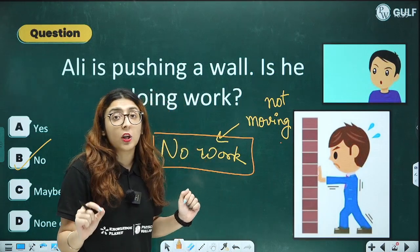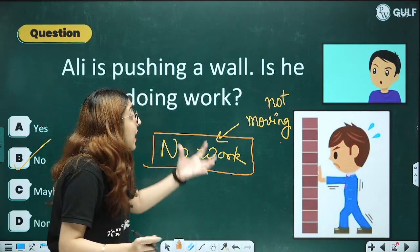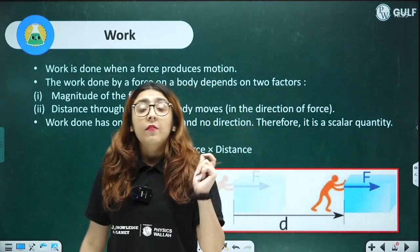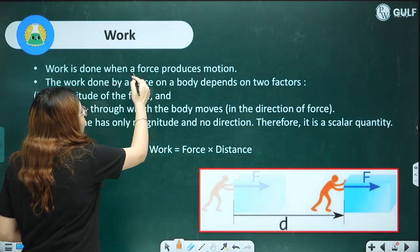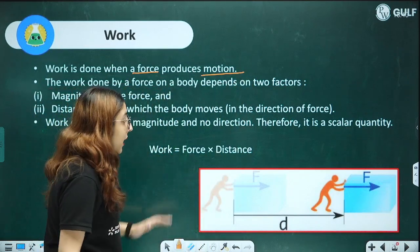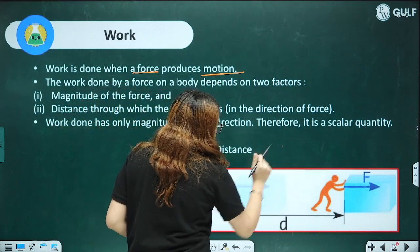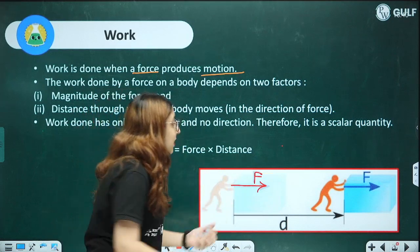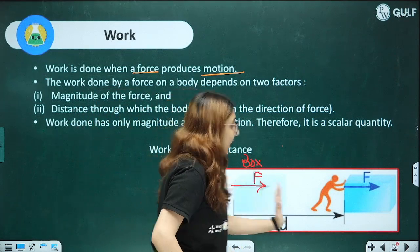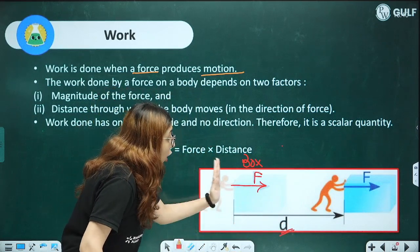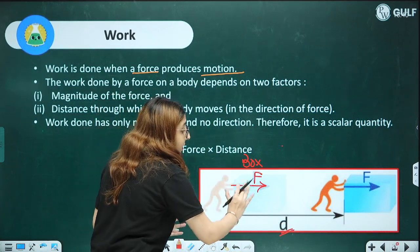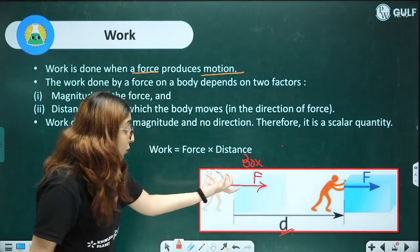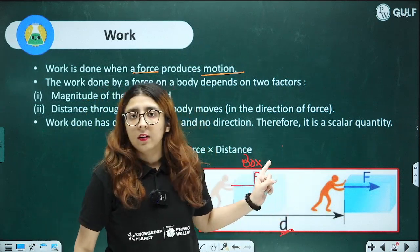Work done plays a very important role in physics. Work is nothing but when force is applied and it produces motion. For example, if I am pushing a box with F amount of force and the box is covering a displacement — by applying the force the box is covering distance in the direction of force — you say work is done.